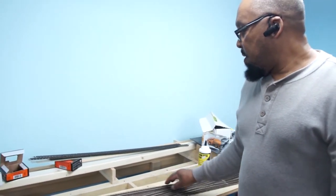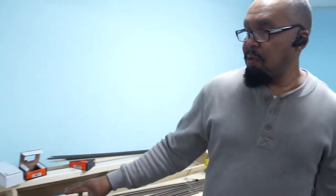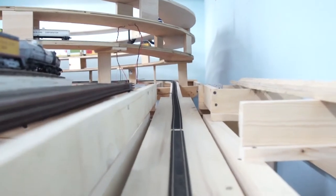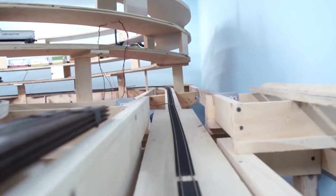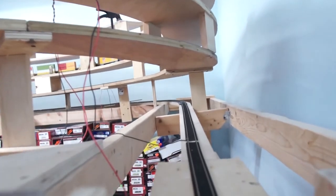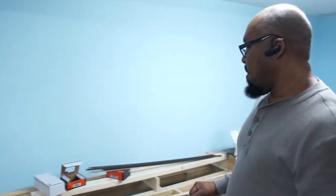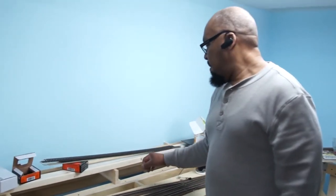The one on my right is actually a branch line that runs underneath the helix, well through the helix and underneath the helix coming around, and then it starts descending on this end at a two percent incline.